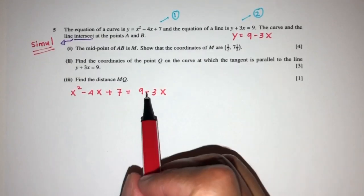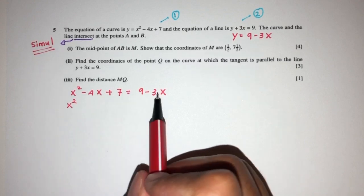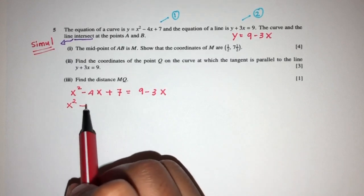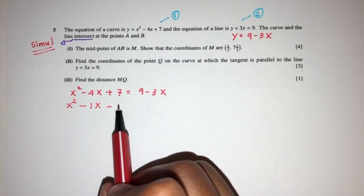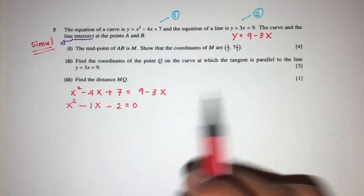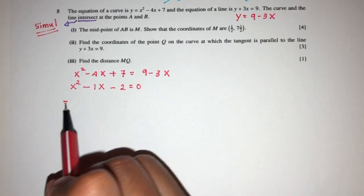Let's send everything to one side. You will have x², minus 4 plus 3 should be minus 1x, and then plus 7 minus 9 will be minus 2. So x² - 1x - 2 equal to 0. Now we just have to use factorization to see what happens.